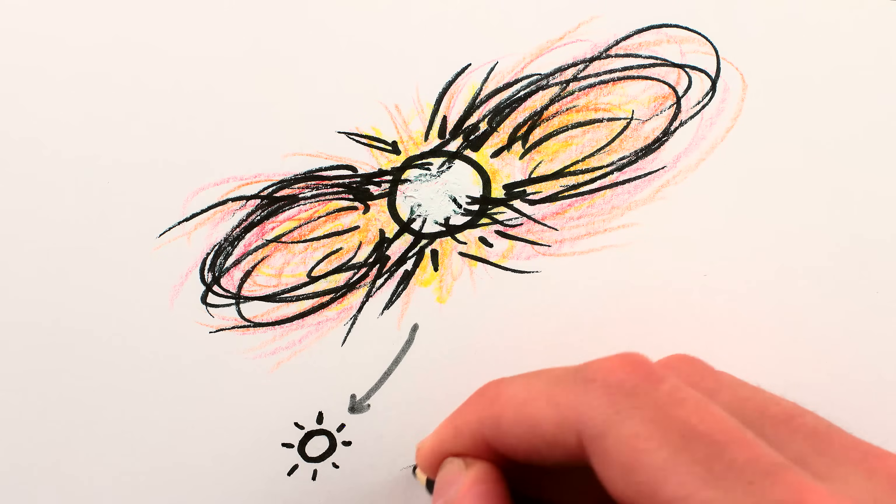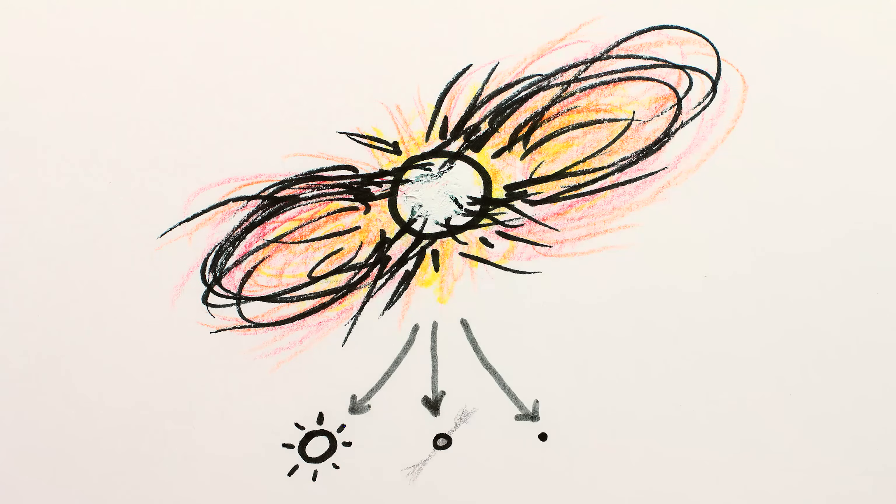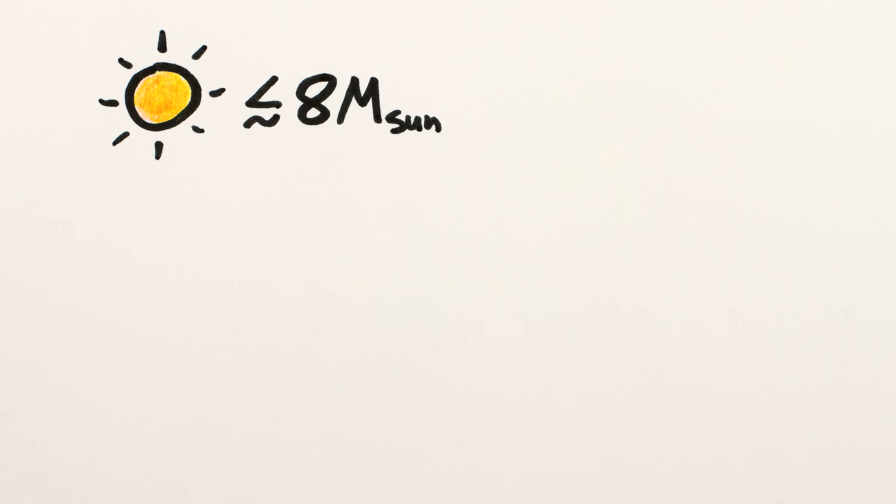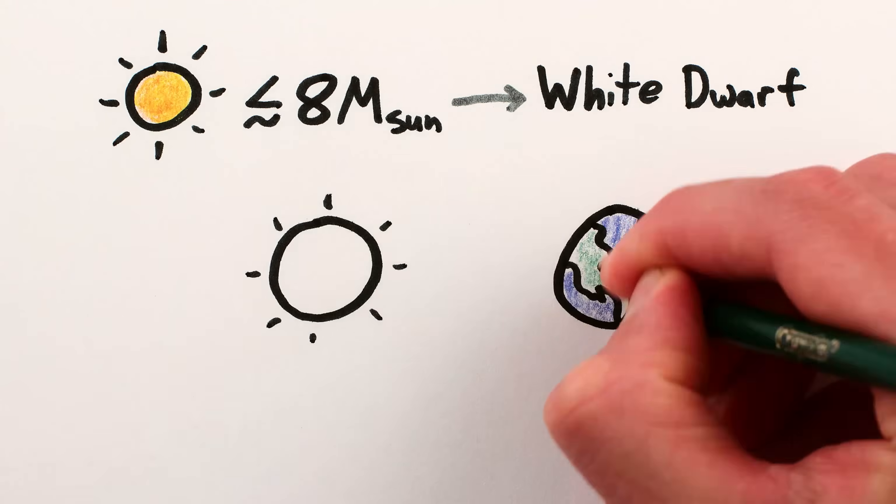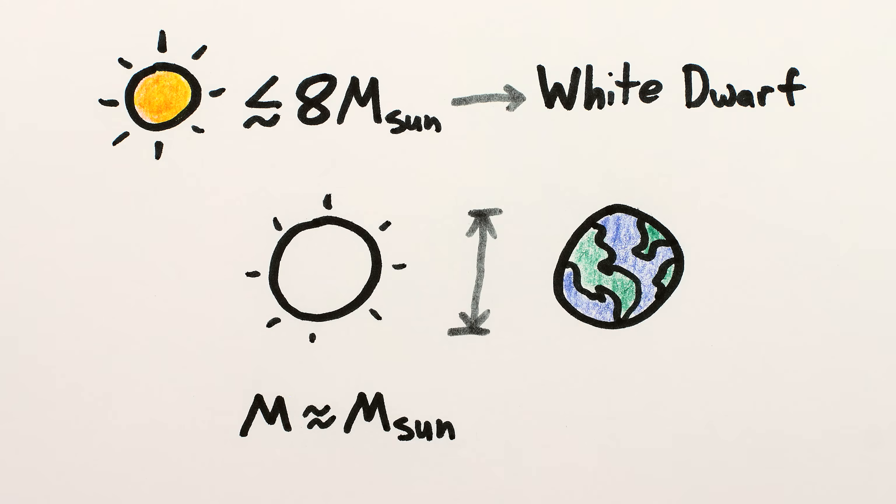And when a star dies, it will turn into one of three very different and physically distinct things. If the star is small, its core will turn into a white dwarf, which is an object about the size of the Earth, almost as massive as the Sun.